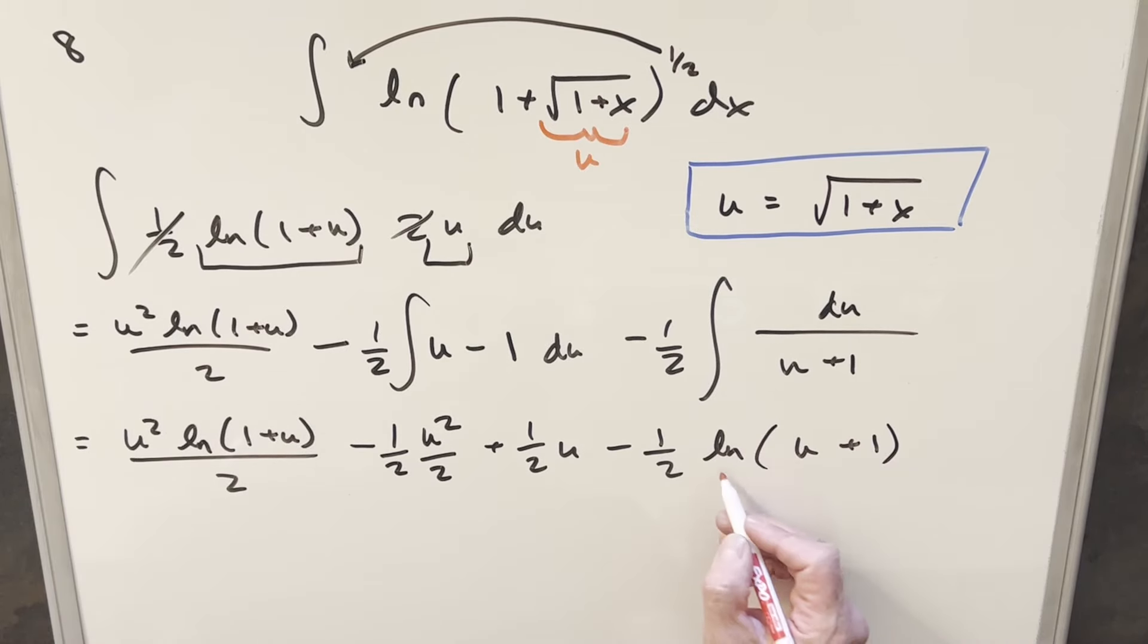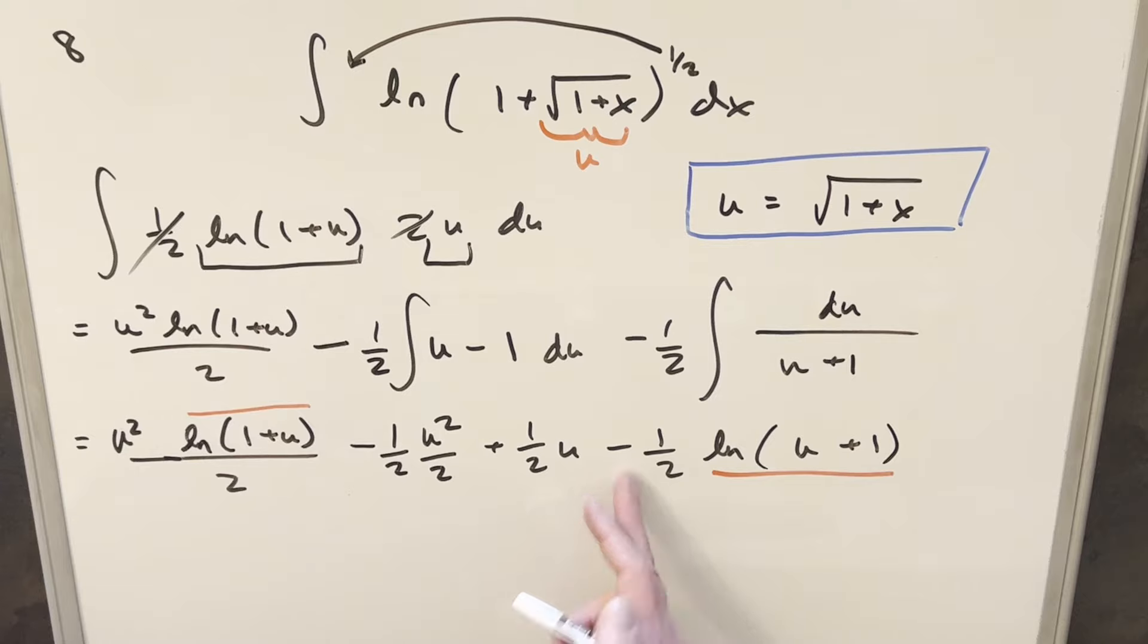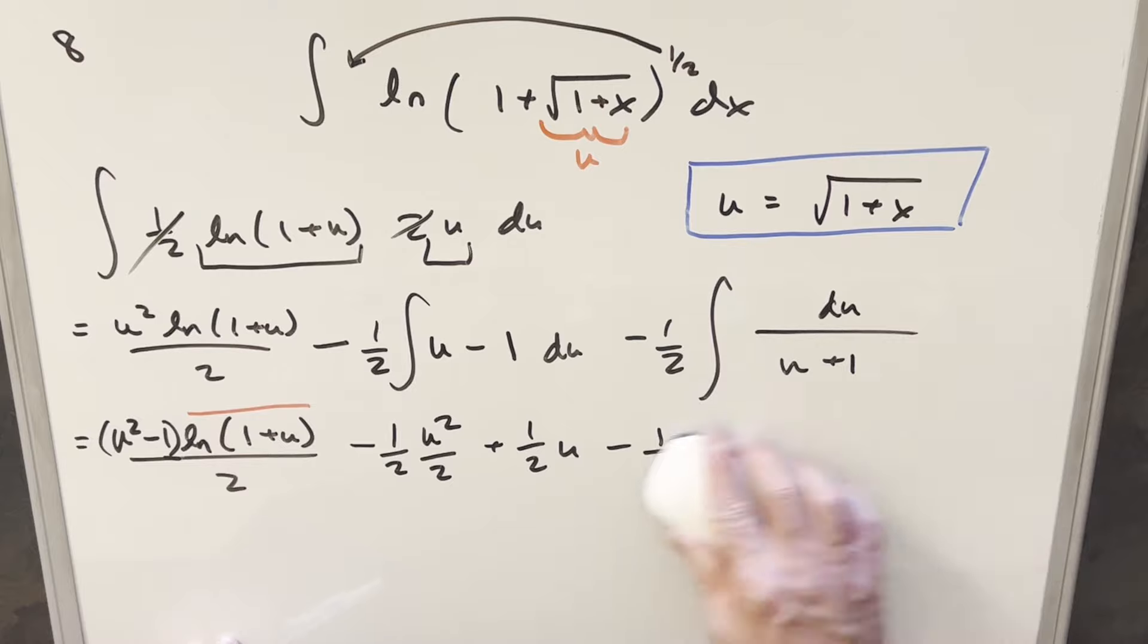And then what I want to do to combine terms, notice we've got natural log u plus 1 here, natural log u plus 1 here. We have the 2. So since we have the same denominator of 2 in both these, we just have like 1 copy here. We can combine it with this one and just subtract 1 and write it this way and get rid of this part over here.